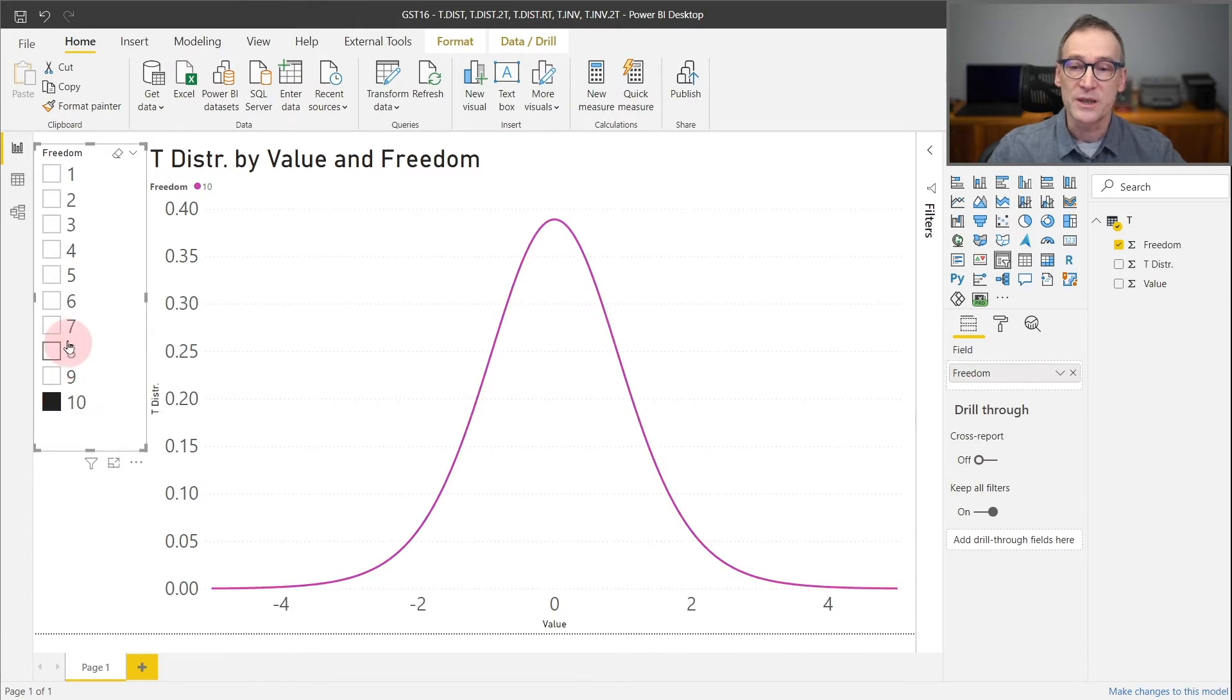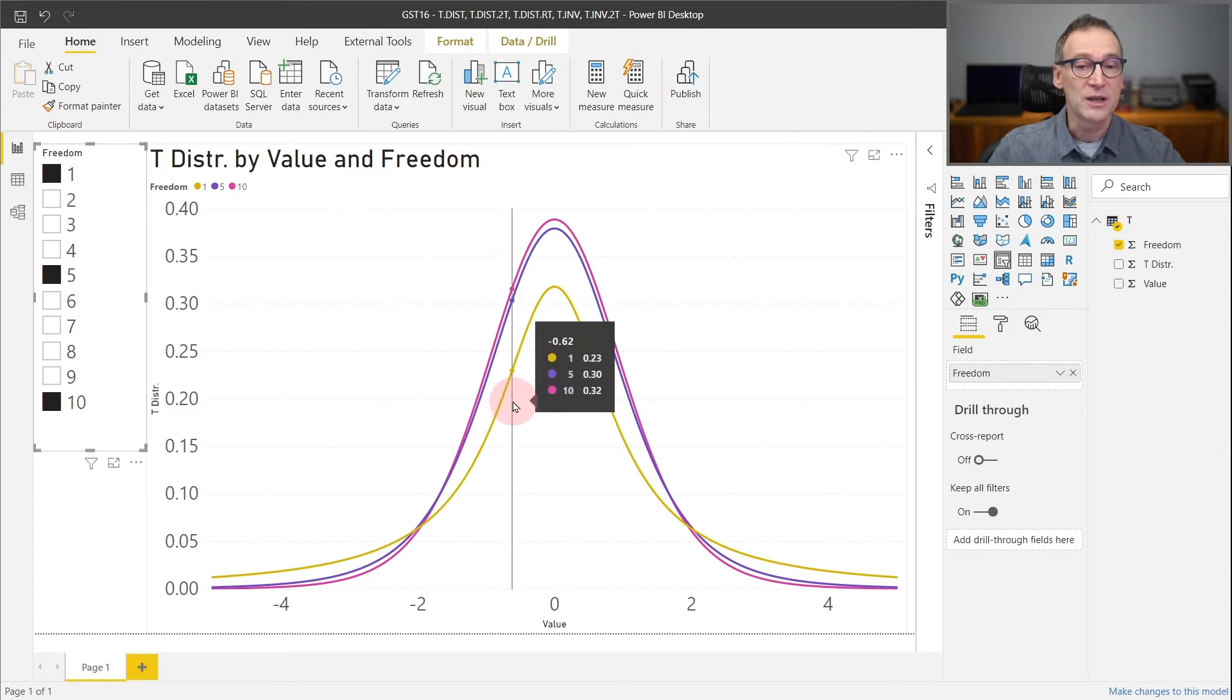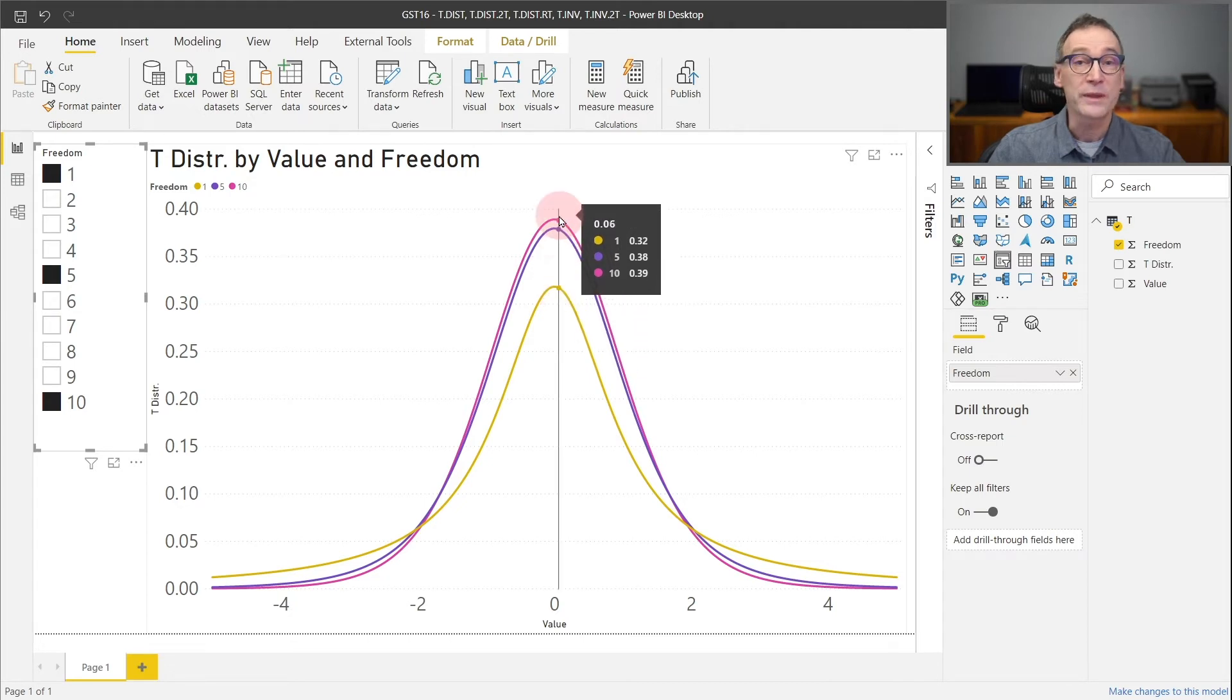In order to appreciate the difference, it is useful to put multiple values in the same chart, so to appreciate the difference between a Student's t-distribution with 1 for the degree of freedom or with 10.